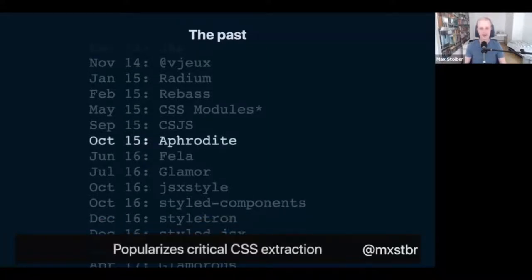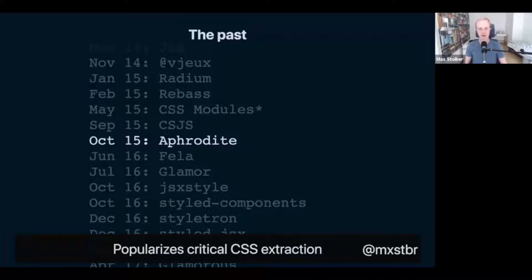In October 2015, Khan Academy released Aphrodite — a fantastic library that was the first to realize you could do critical CSS extraction. It was the first to realize that important performance benefit where you could only inject the styles that were actually used. Aphrodite is a great library that's still well-maintained and widely used — I highly recommend checking it out.